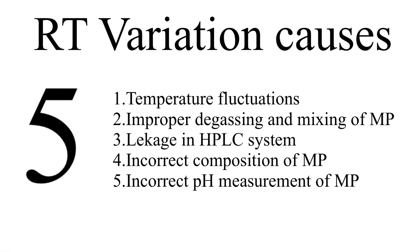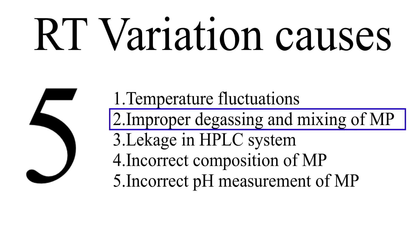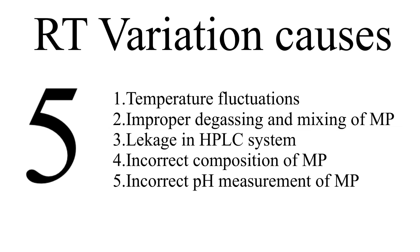These were the five causes of retention time variation seen in chromatographic analysis. Let us quickly recall all of them: Number one is fluctuation in temperature. Number two, improper degassing of the mobile phase. Number three, leakage in the HPLC system. Number four, incorrect mobile phase composition. And the fifth and last one is incorrect pH measurement of the mobile phase.